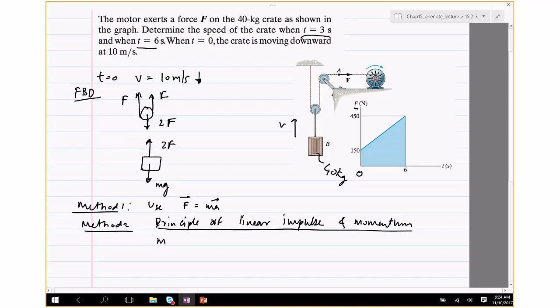Which states that mv1 plus the integral of F dt equals mv2. So what we do know is that initially at t equals 0, the velocity is given to us. What we do not know is velocity v2 at time t2, which is I think 3 and 6 seconds, right? In order to find the velocity, we need to do that integral F dt. So we need to find F dt from t1, which is 0 to 3 seconds, and we need to find F dt from 0 all the way to 6 seconds. So in order to do that, we need to find basically the force. So 0 is here, 3 is going to be here, we need to find this force.